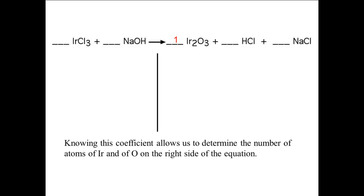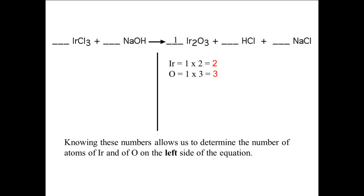I have placed a separator line under the arrow to separate the reactants from the products, because we need to show that the number of atoms of each element is the same on both sides. To find the number of atoms of an element, we multiply the coefficient by the subscript. In this case, the coefficient is 1 and the subscript is 2, so there are two iridium atoms. In the same way, there are three oxygen atoms in the products. Knowing these numbers allows us to determine the number of atoms of iridium and oxygen on the left side — since there are two iridium and three oxygen on the right, there must be the same numbers on the left.